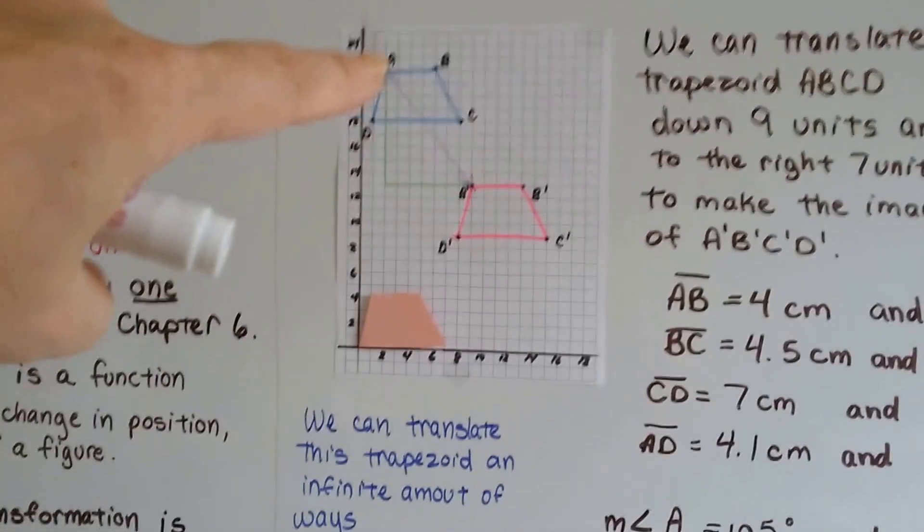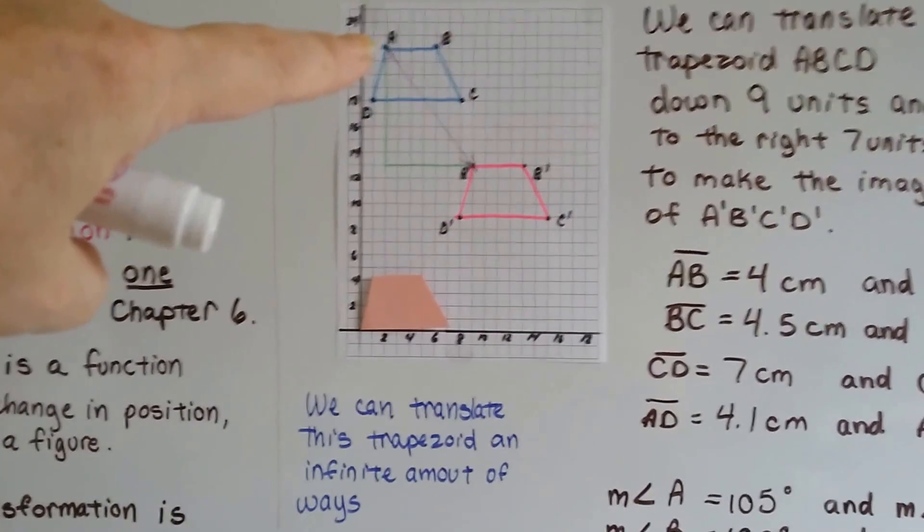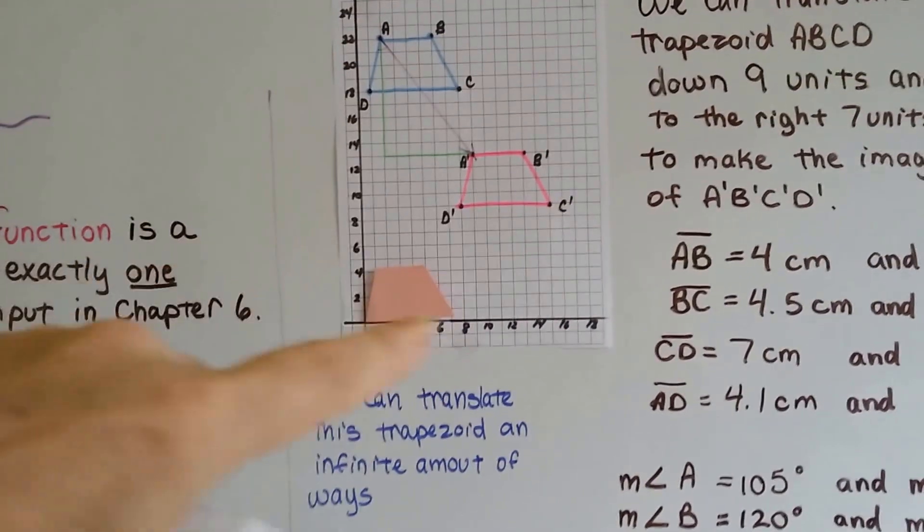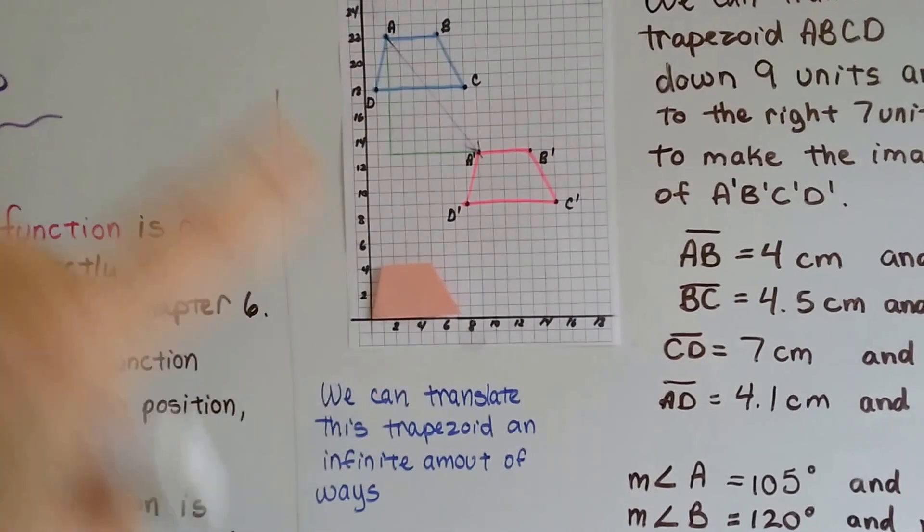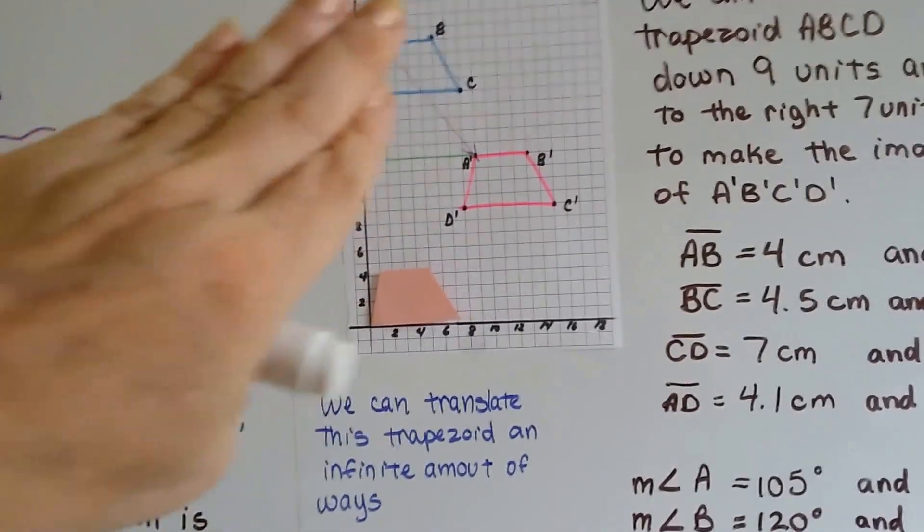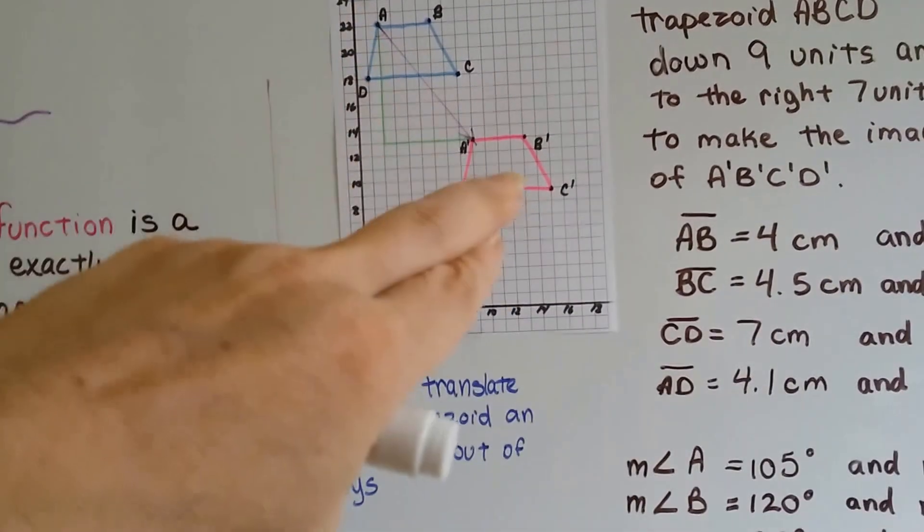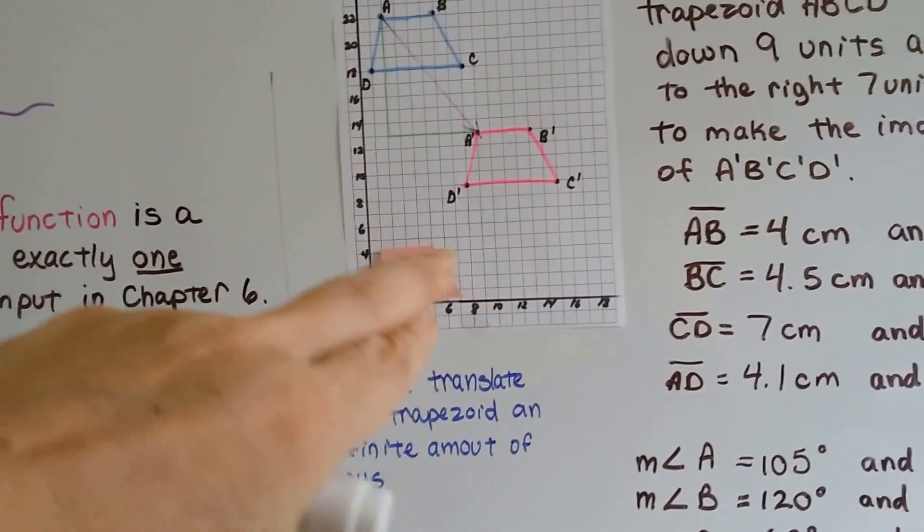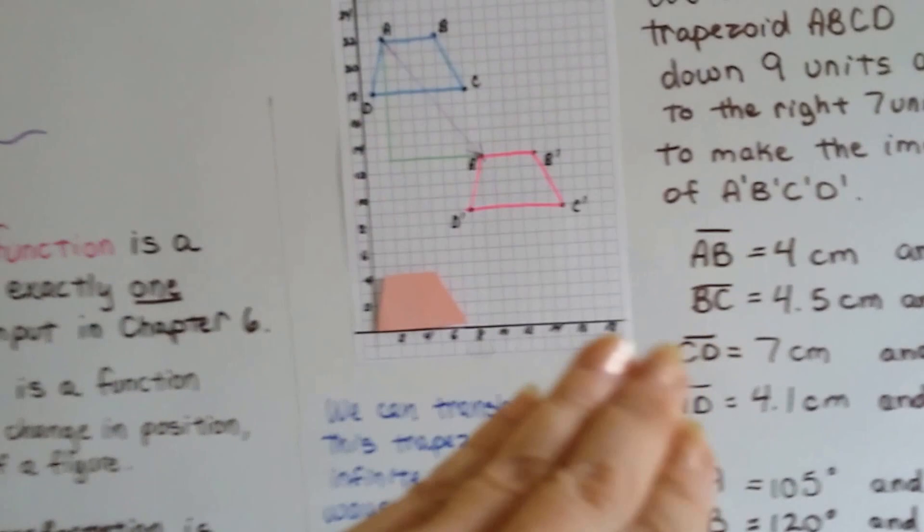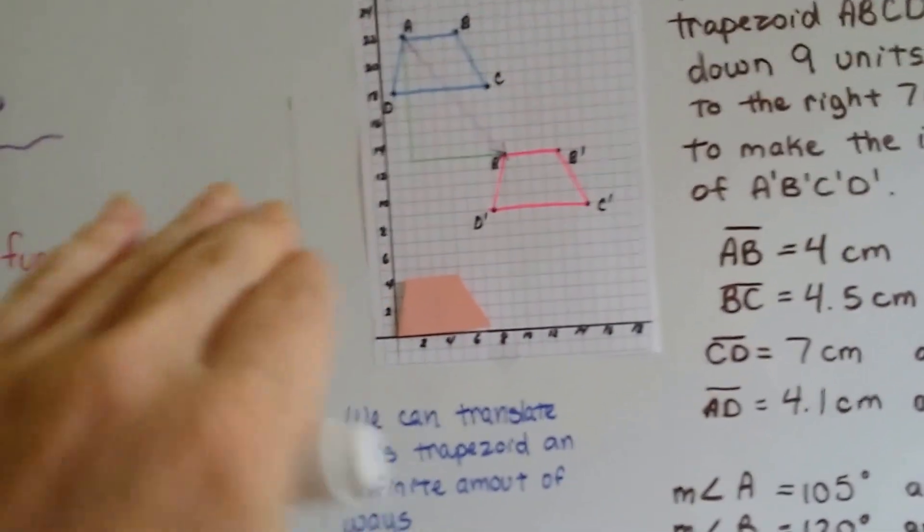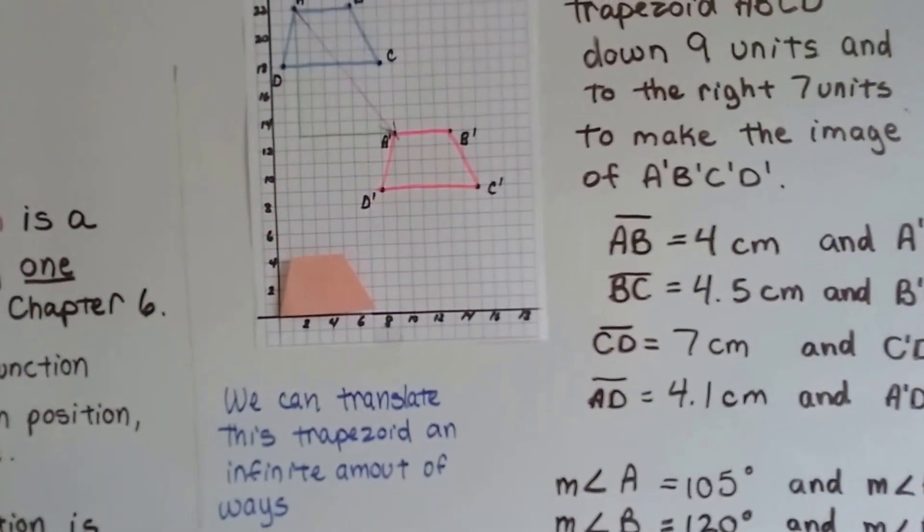This trapezoid, we can translate this trapezoid to an infinite amount of ways. We could put it all over a coordinate plane anywhere we wanted to, and it would just slide there, and we would have the same orientation, shape and size, it would just be in a different spot. We could put it just in a different spot and it would translate to another spot.